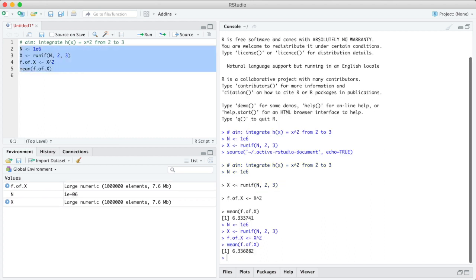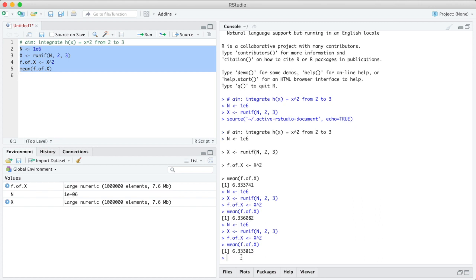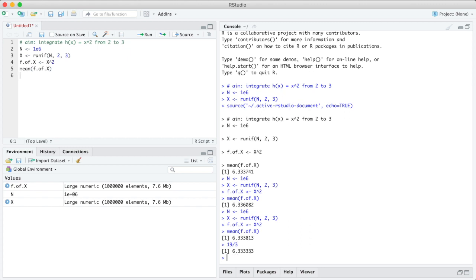Let's run that. So what we get is 6.336082. If I run it again, 6.33 something else. So it seems to be around 6.33. Now what's the theoretical value? That is 19 over 3 which is 6.33333. So I would call that an excellent match. And we see this method also works.